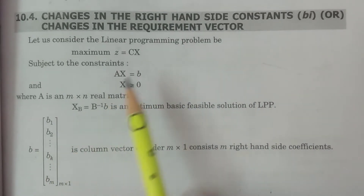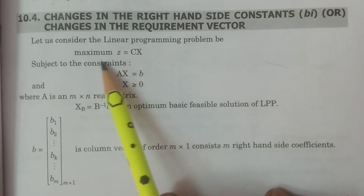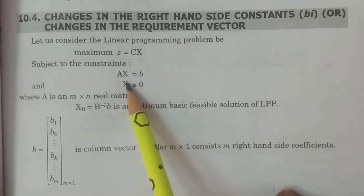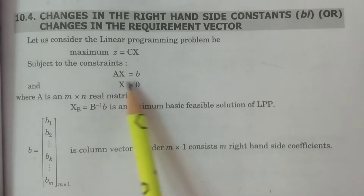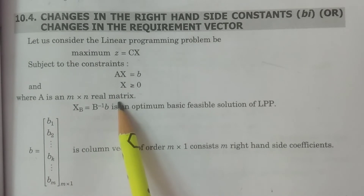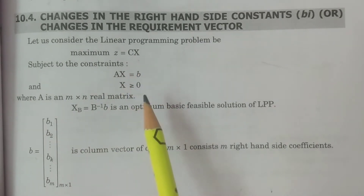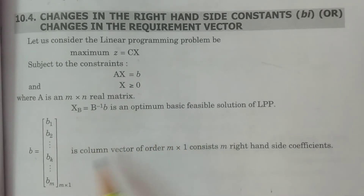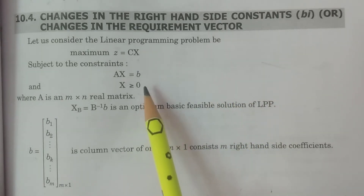For this, I am considering a linear programming problem in matrix form: maximize Z equal to Cx, subject to the constraint Ax equal to B, and x greater than or equal to 0. Here A is an m×n real matrix, C is a cost coefficient matrix, and B — the right-hand side — is nothing but the right-hand side requirement vector, the vector of right-hand side constants.